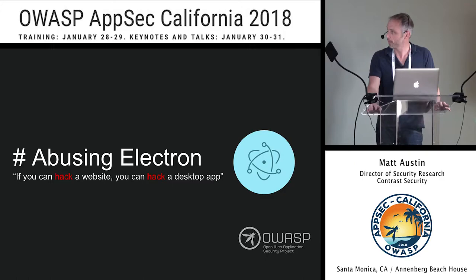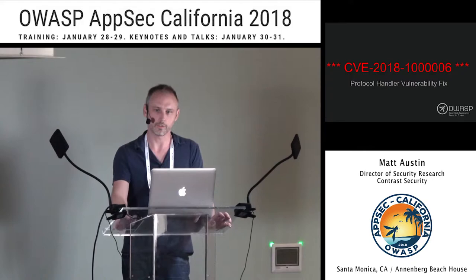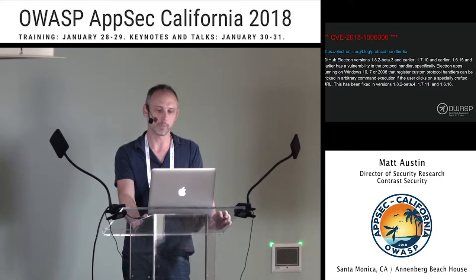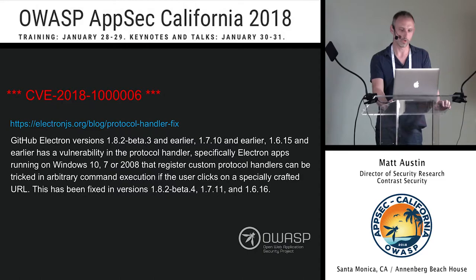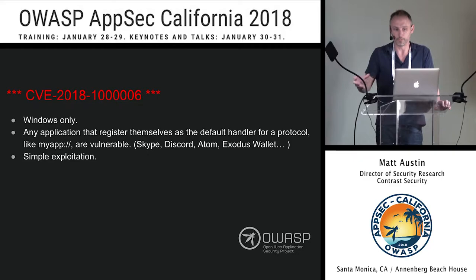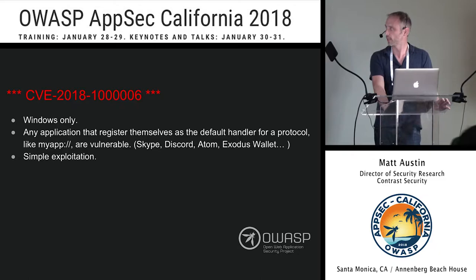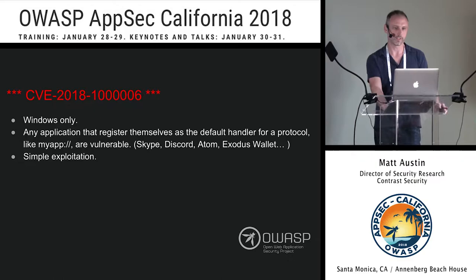I want to go a little off topic to cover a CVE that's directly in Electron — it came out like two days ago. This is a universal issue for any application that uses Electron, with the caveat that it has to use a custom protocol handler. Applications like Skype, Discord, or a Bitcoin wallet — they're all built on Electron and register a protocol handler so web pages can invoke and open them. There's a flaw in all Electron apps where the way this protocol handler was registered in Windows led to code execution. If you trust Skype and say 'always open,' a website could inject JavaScript to make this execute.